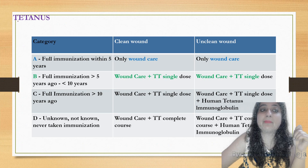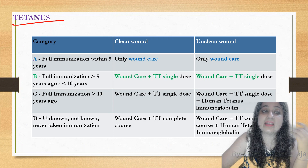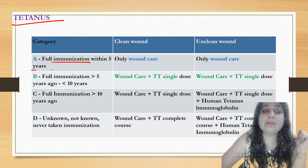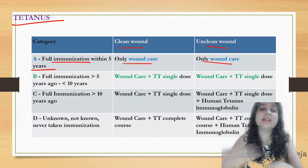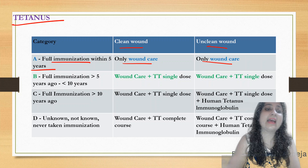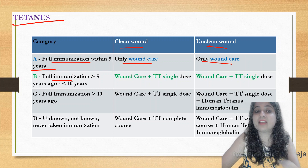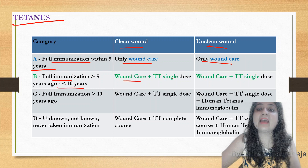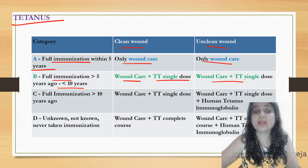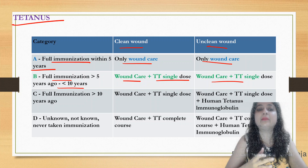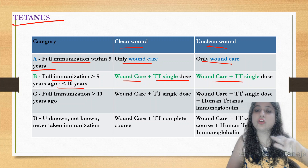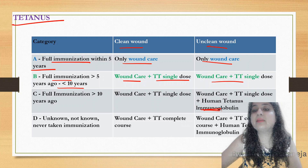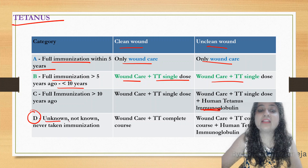Next: tetanus. There are four categories. Category A: full immunization within five years — only wound care, whether clean or unclean. Category B: full immunization more than five years but less than ten years ago — wound care plus tetanus toxoid single dose for both clean and unclean wounds. Category C: full immunization more than ten years ago — clean wound gets wound care plus tetanus toxoid single dose; unclean wound gets wound care, tetanus toxoid, plus human tetanus immunoglobulin.